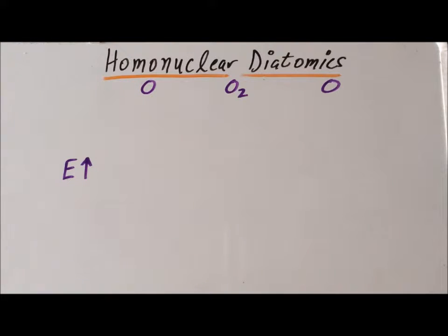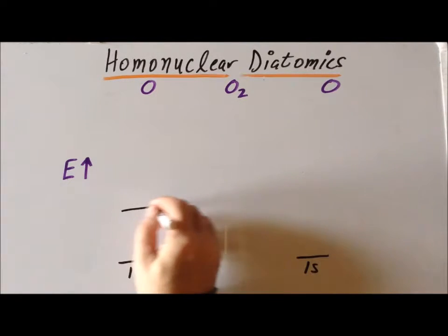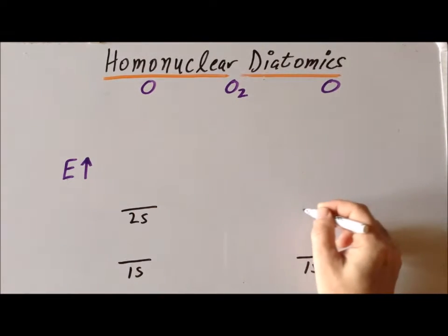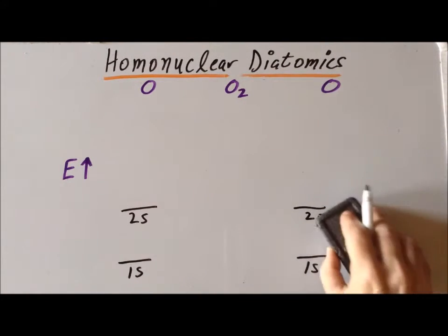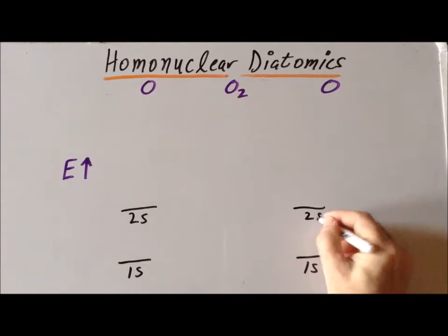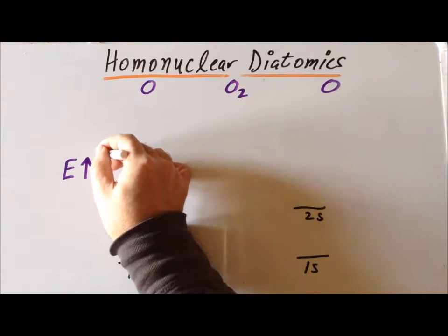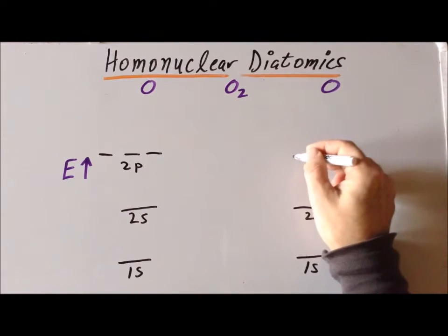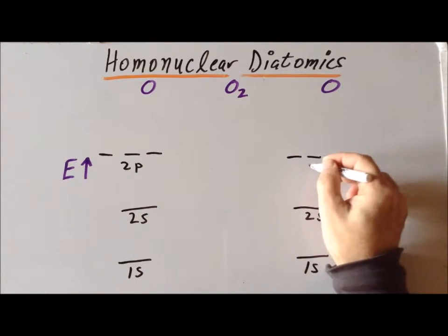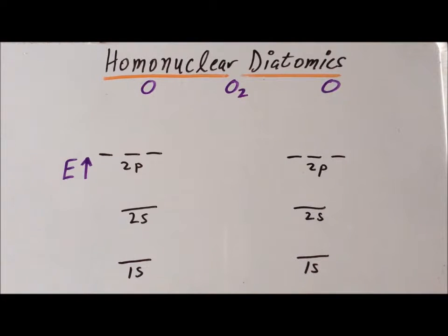First, we want to look at dioxygen O2. The atomic orbitals of each of the two oxygen atoms are 1s, 2s, and 2p atomic orbitals. Also recall that oxygen has 8 electrons.